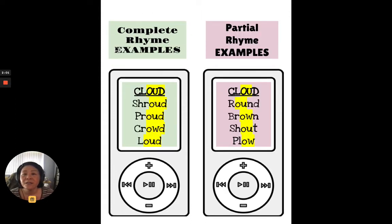So here are some examples of complete rhymes. Cloud has that owd sound, shroud O-U-D owd, proud O-U-D owd, crowd O-W-D but it sounds like the O-U-D in cloud and loud O-U-D. So complete rhymes don't have to be spelled the same, but they have to sound exactly the same.